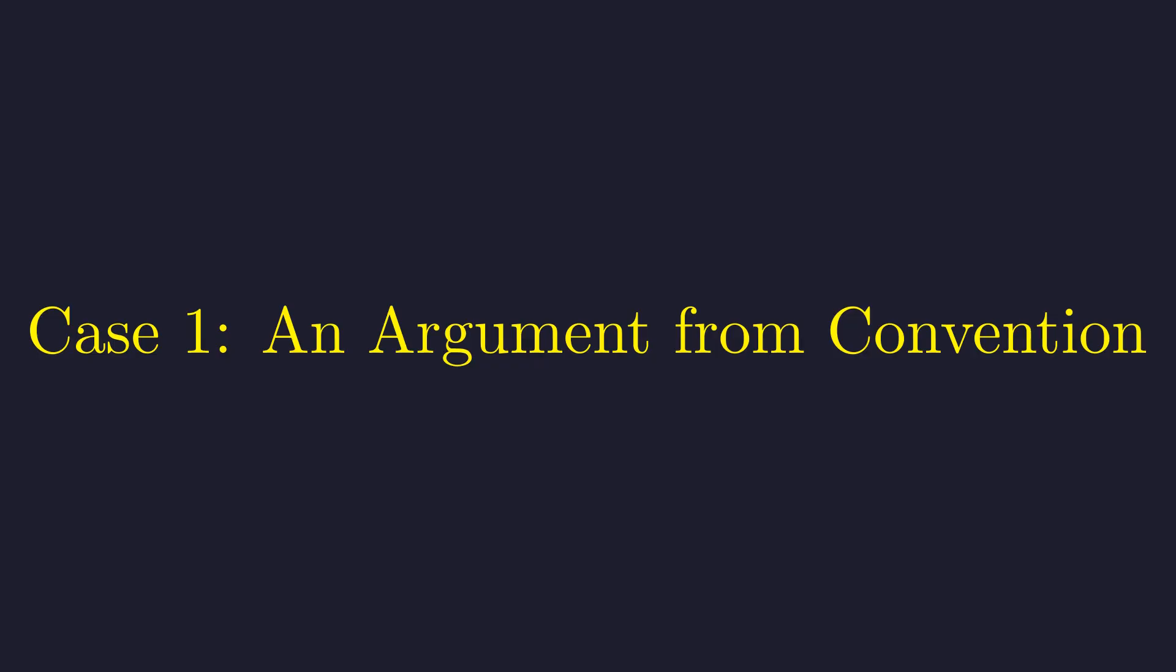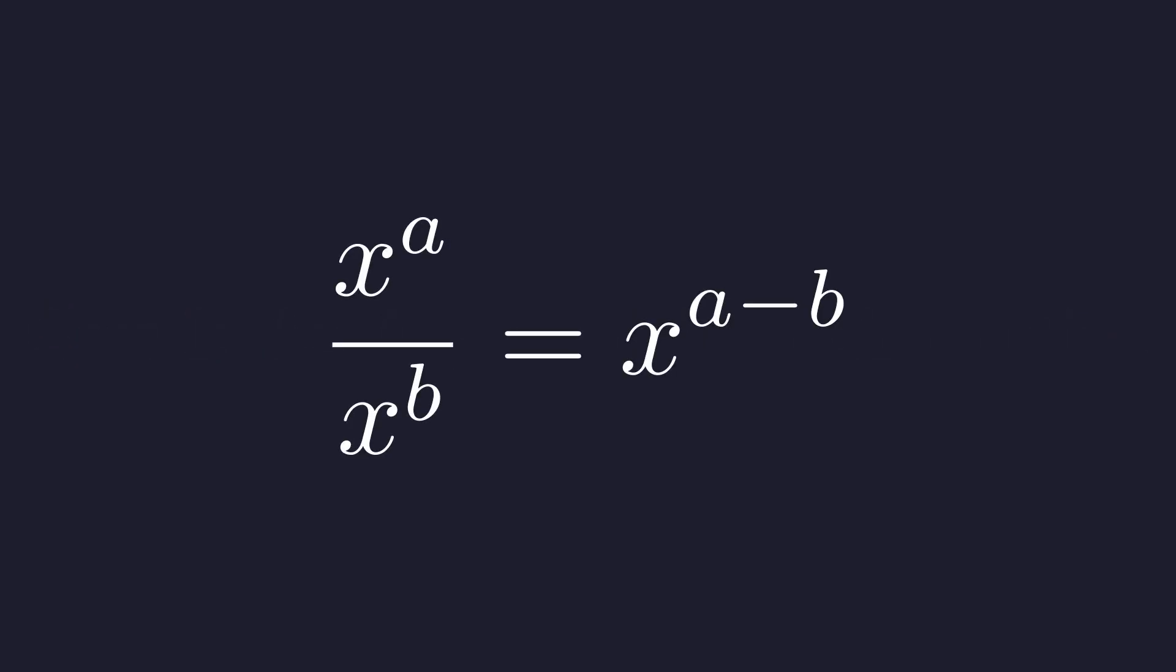First, let's explore the powerful heuristic argument that zero to the power of zero should be one. We begin with the fundamental rule of exponents for division. Now let's see what happens if we choose the exponents a and b to be the same value, say n. Substituting n for a and b gives us x to the power of n minus n.